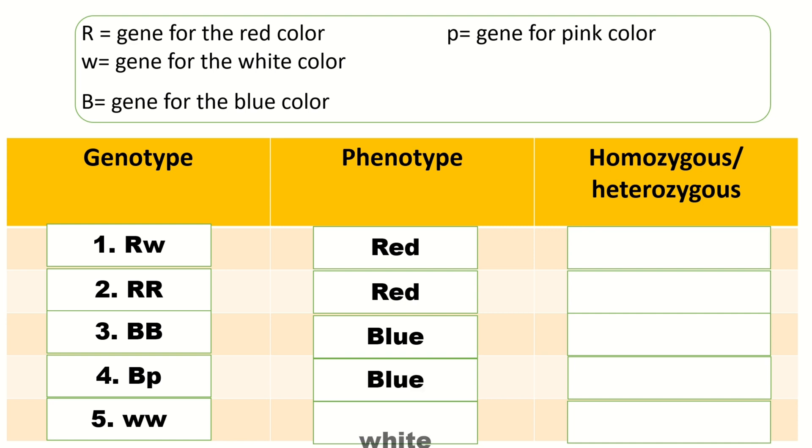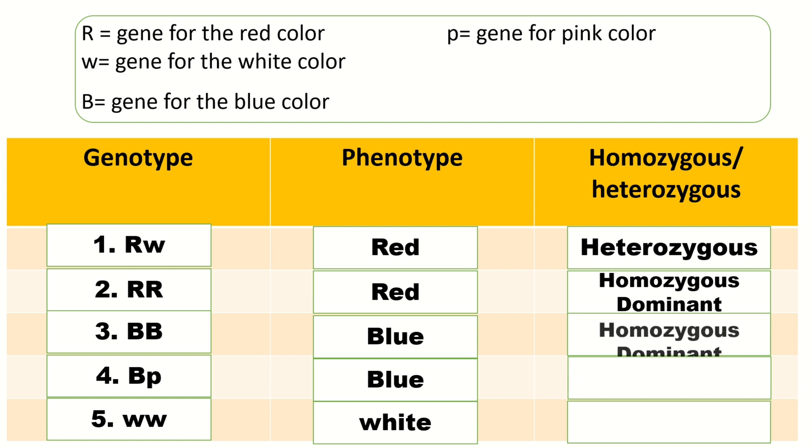Small w and small w, phenotype is white. Now let us identify the genotype whether it is homozygous or heterozygous. Number one, number two, number three, number four.